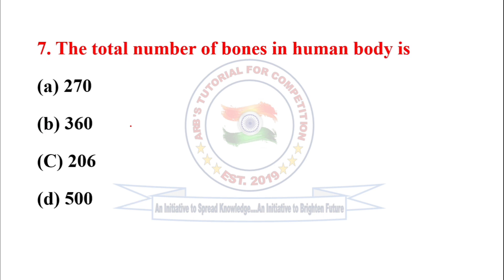Next question: The total number of bones in the human body is? Option B — that is 206 — is the correct answer.